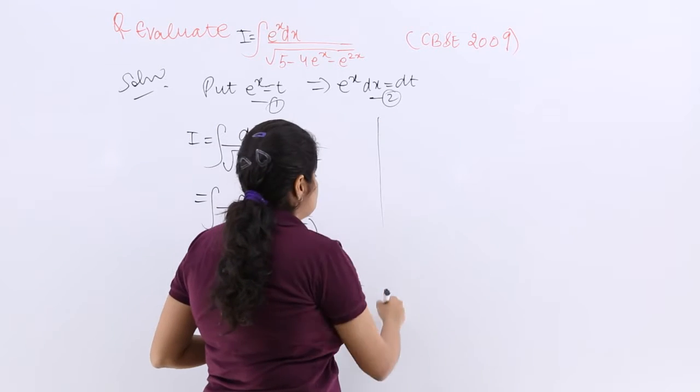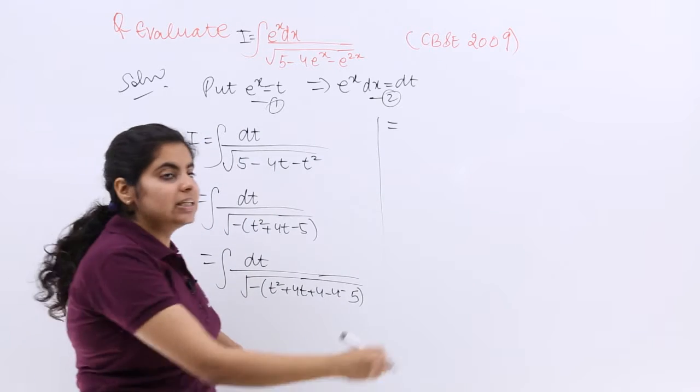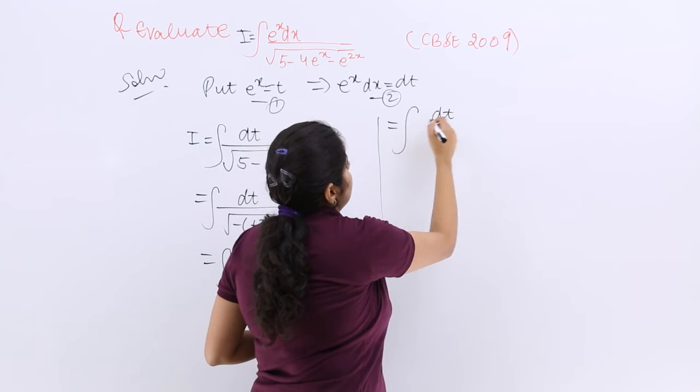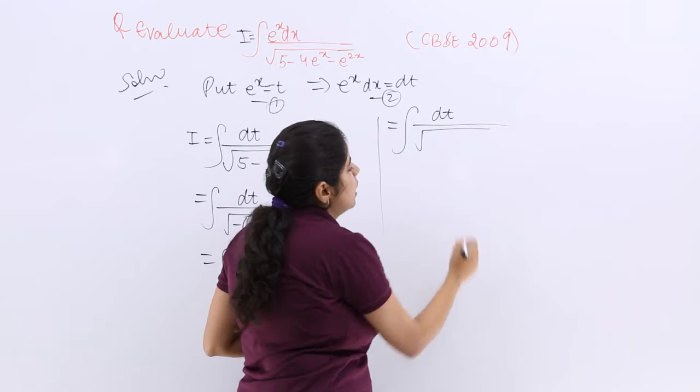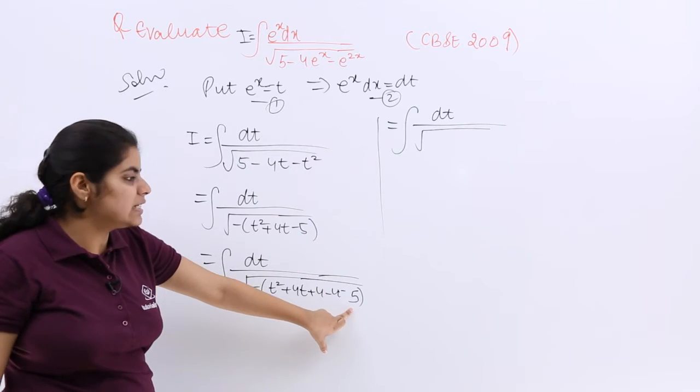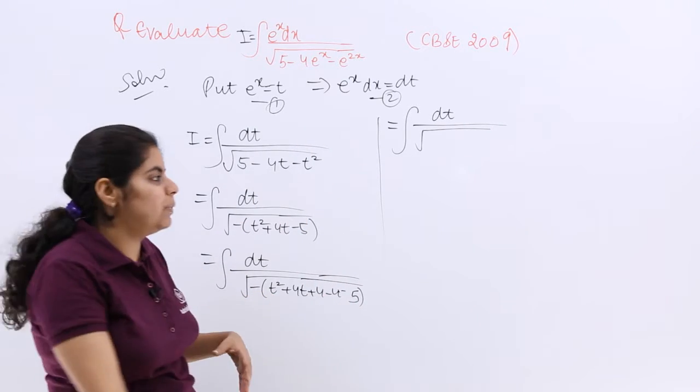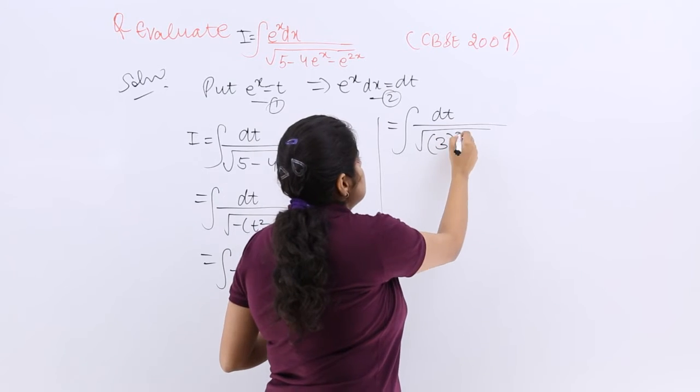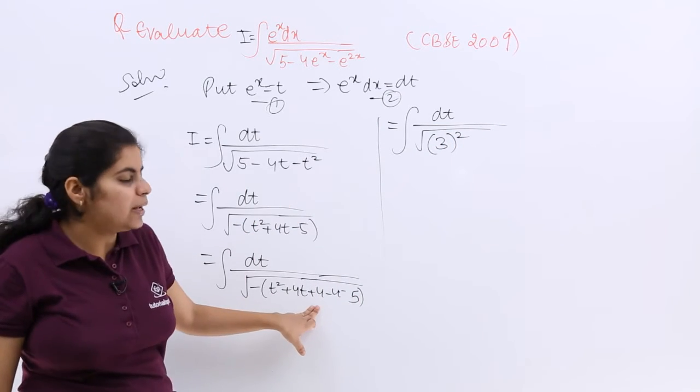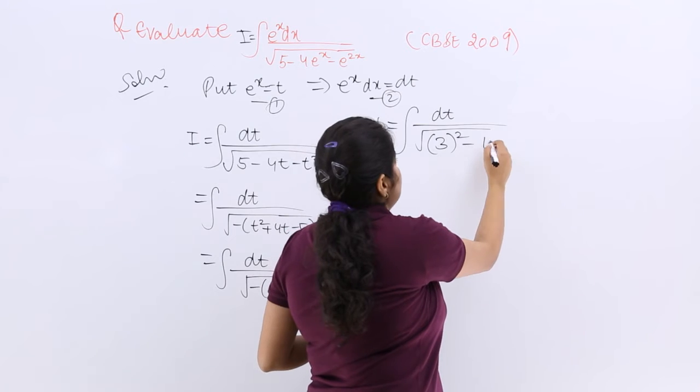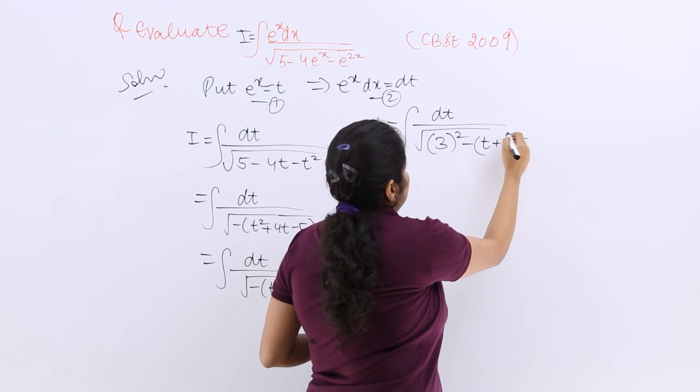So let me move to the other side of the board to utilize some space. It is dt upon under root then I have minus 9 outside minus we make it plus 9 which is 3 square and here it is t plus 2 whole square. So minus t plus 2 whole square.